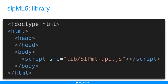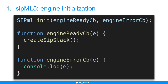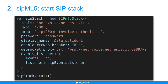This is the inclusion of the JavaScript library into the HTML code — only a single file is needed. Then the engine initialization: we call the init method on the SIPml object, passing to it two callbacks as parameters — one to manage failure and one for success. In the case of success, we are going to create the SIP stack.